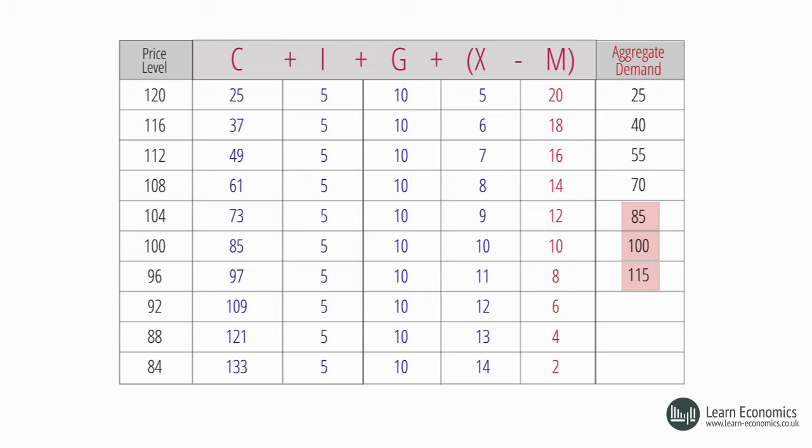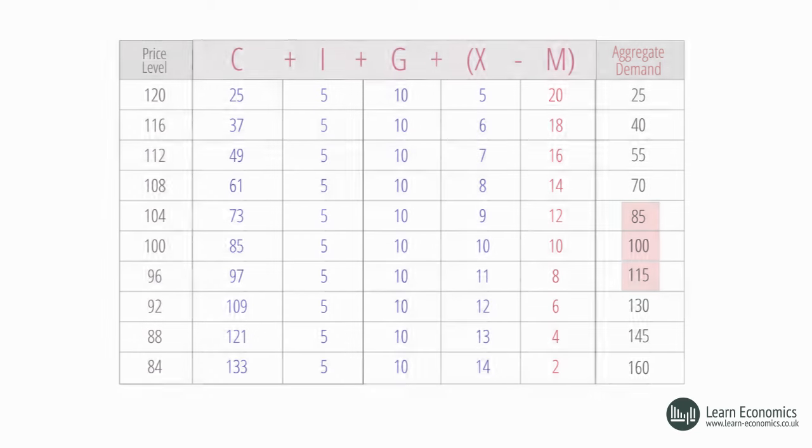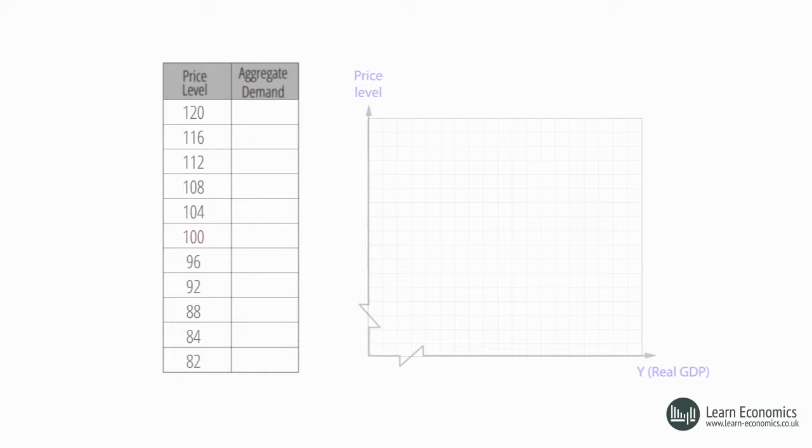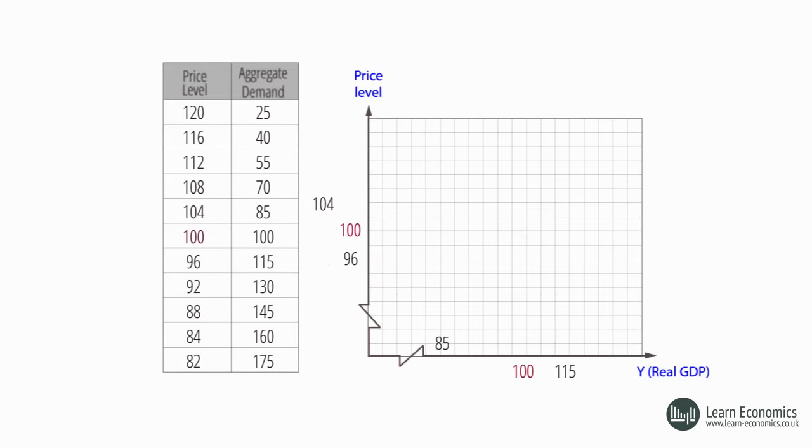Looking at the relationship between AD and the price level graphically, we see that an AD curve will slope downwards. A fall in the price level, from P to P1, will cause the quantity demanded to increase from Y to Y1. The downward slope of AD is explained in terms of the following effects.